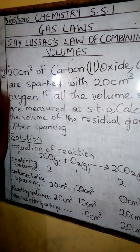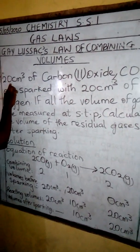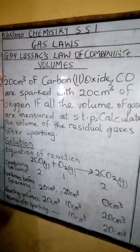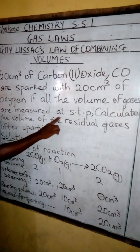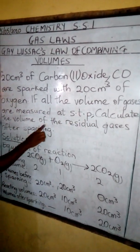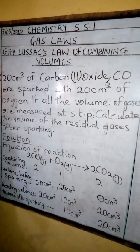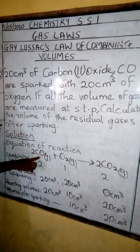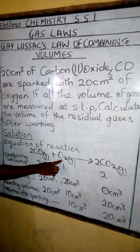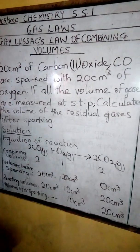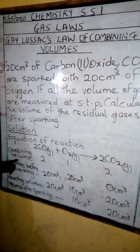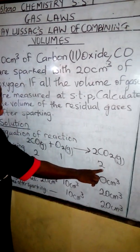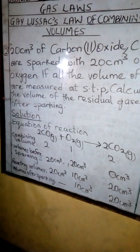Now the second example. We are going to consider this question: 20 cm³ of carbon monoxide (CO) has sparked with 20 cm³ of oxygen. If all volumes of gases are measured at STP, calculate the volume of the residual gases after sparking. Solution: The equation of reaction is: two molecules of CO reacting with one molecule of O₂ gas to give two molecules of CO₂. The combining volumes are: 2 volumes CO combining with 1 volume O₂ to produce 2 volumes CO₂ gas.